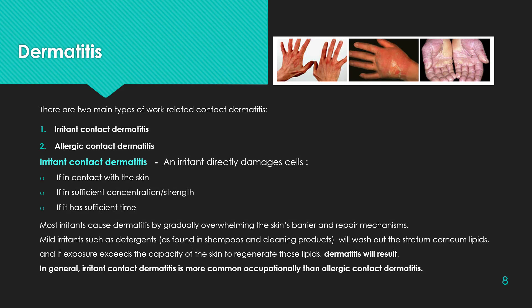There are two main types of work-related contact dermatitis. The first type is irritant contact dermatitis, where an irritant directly damages cells if in contact with the skin, in sufficient concentration or strength, and for sufficient time. Most irritants cause dermatitis by gradually overwhelming the skin's barrier and repair mechanisms. Mild irritants such as detergents — as found in shampoos and cleaning products — wash out the stratum corneum lipids, and if exposure exceeds the capacity of the skin to regenerate those lipids, dermatitis will result. In general, irritant contact dermatitis is more common occupationally than allergic contact dermatitis.